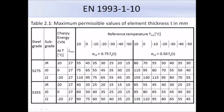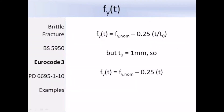This is the table you would use if you're using the Eurocode 3 approach — Table 2.1 — giving the maximum permissible values of the element thickness. At the top row is the reference temperature, which is the surface temperature lowered. For different stress levels we refer to different sections of the table: there's a section for 0.75 of the yield stress, 0.5 of the yield stress, and also 0.25 of the yield stress. Once you know the stress level you're dealing with, it's quite similar to using Table 4 from BS 5950. FY(T) as given in Table 2.1 is the nominal yield strength FY,norm minus 0.25 times T divided by T0, where T0 is the reference thickness of 1 mm. This simplifies to: nominal yield strength FY,norm minus 0.25 times T, where T is just the thickness of the element.